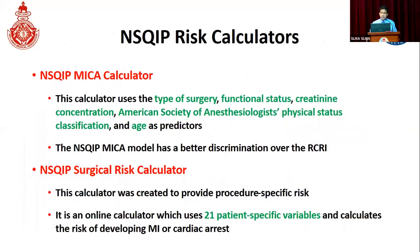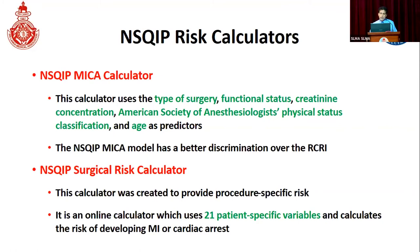The National Surgical Quality Improvement Programme myocardial infarction and cardiac risk calculator uses parameters such as type of surgery, functional status, creatinine concentration, ASA physical status classification, and age — notably, age was not considered in Lee's index. The NSQIP surgical risk calculator is an online calculator where 21 patient-specific variables are used to calculate the risk of myocardial infarction and cardiac arrest during the perioperative period. We can use either of these tools to assess risk and discuss with the surgical team and family.